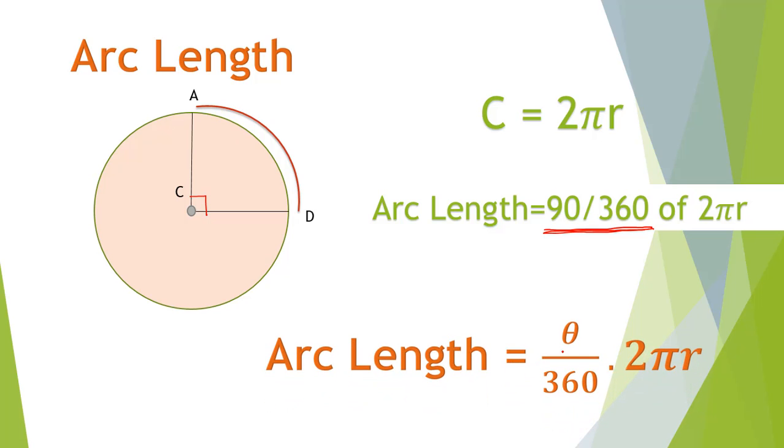From this information, we have a general formula. Arc's length is equal to theta divided by 360 into 2 pi r. Theta is the measure of arc, the central angle.